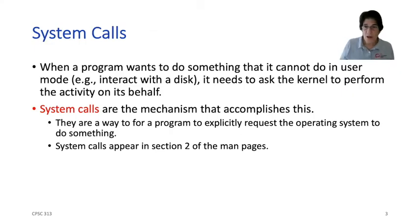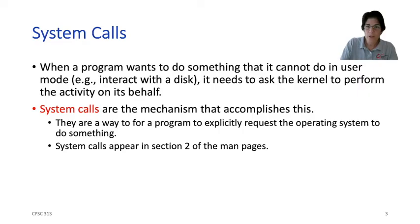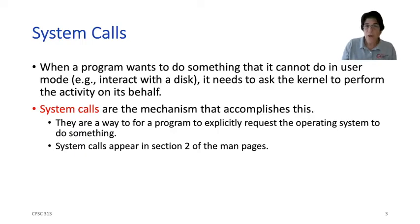That act of asking the operating system to do things is what we call system calls. A system call is when a user process wants to do something it should be allowed to do, but it has to ask the operating system to intervene and perform the actual operation, because the operation requires something that normal programs aren't allowed to do. In this unit, we're going to focus on those system calls that require the operating system to talk to an actual disk drive.